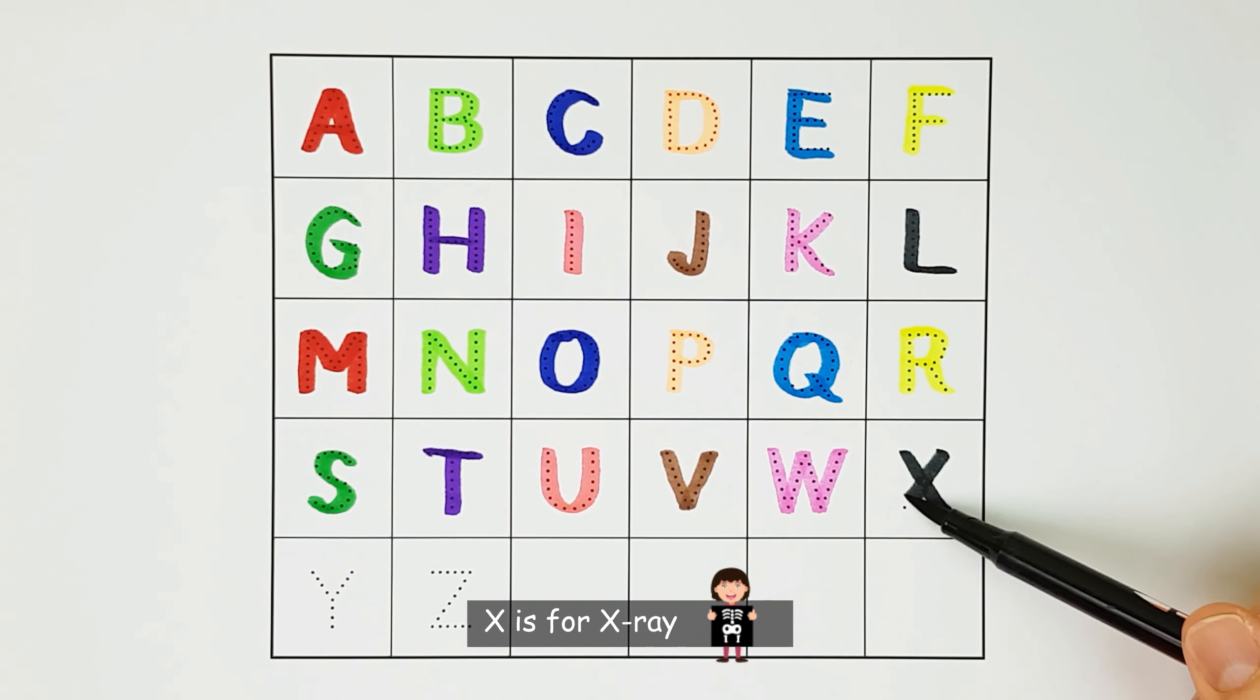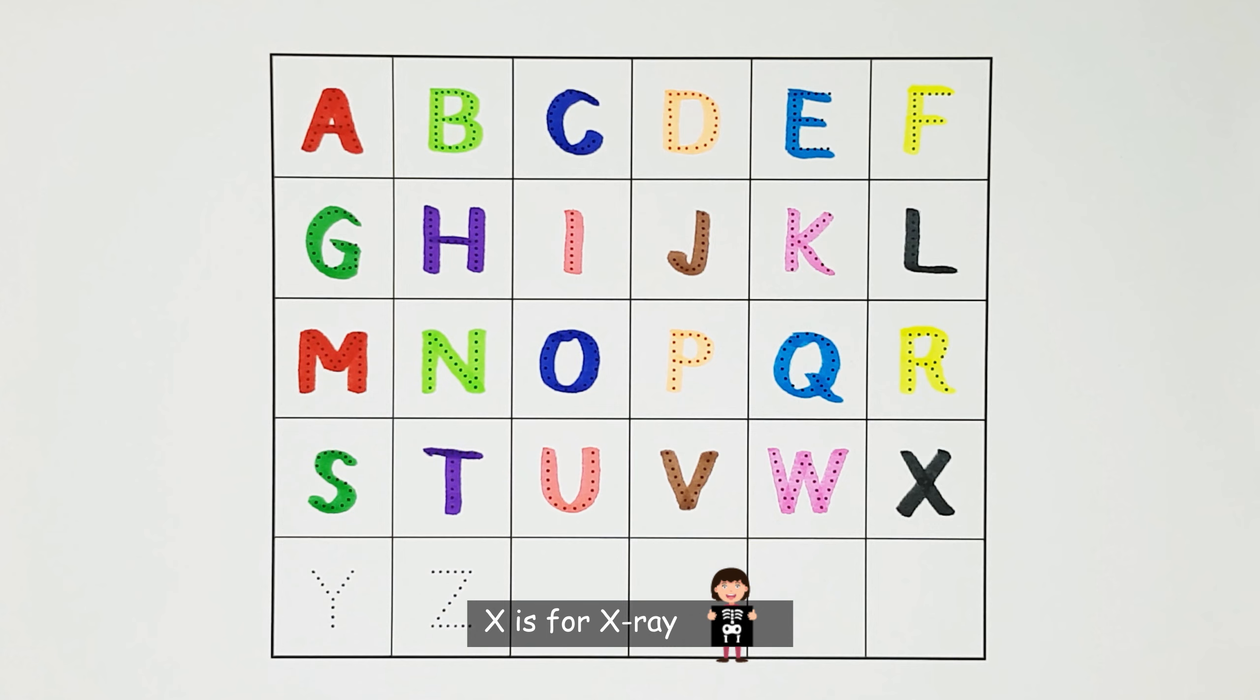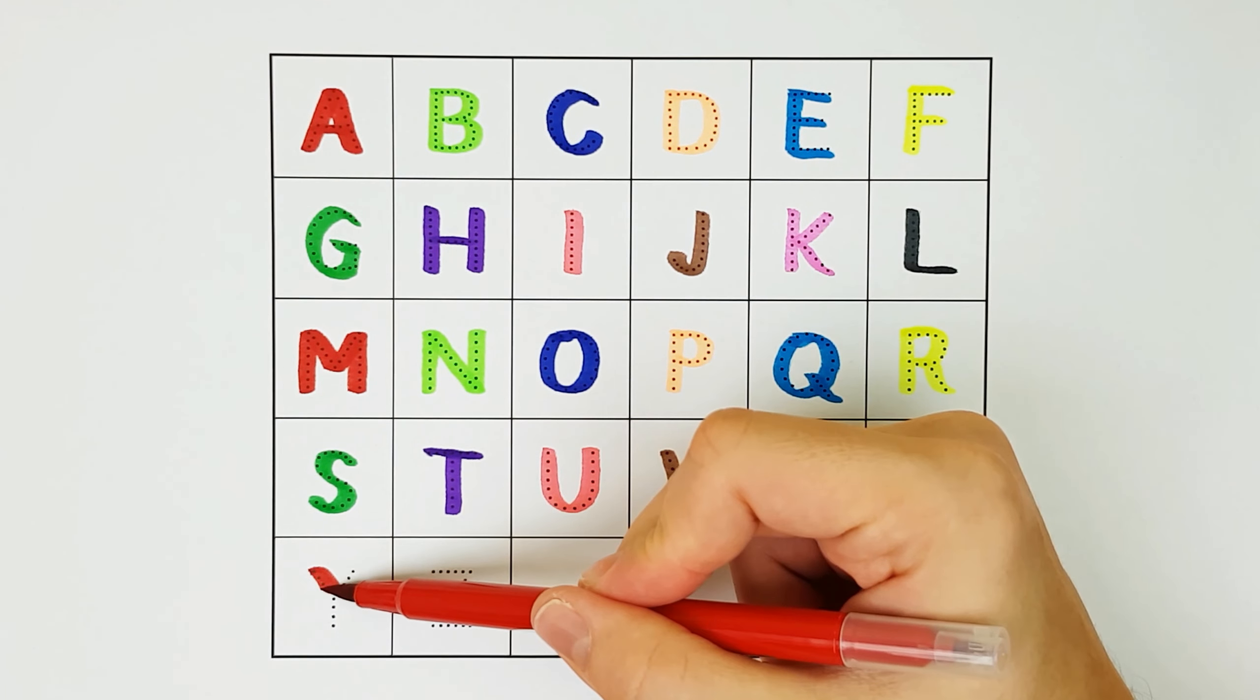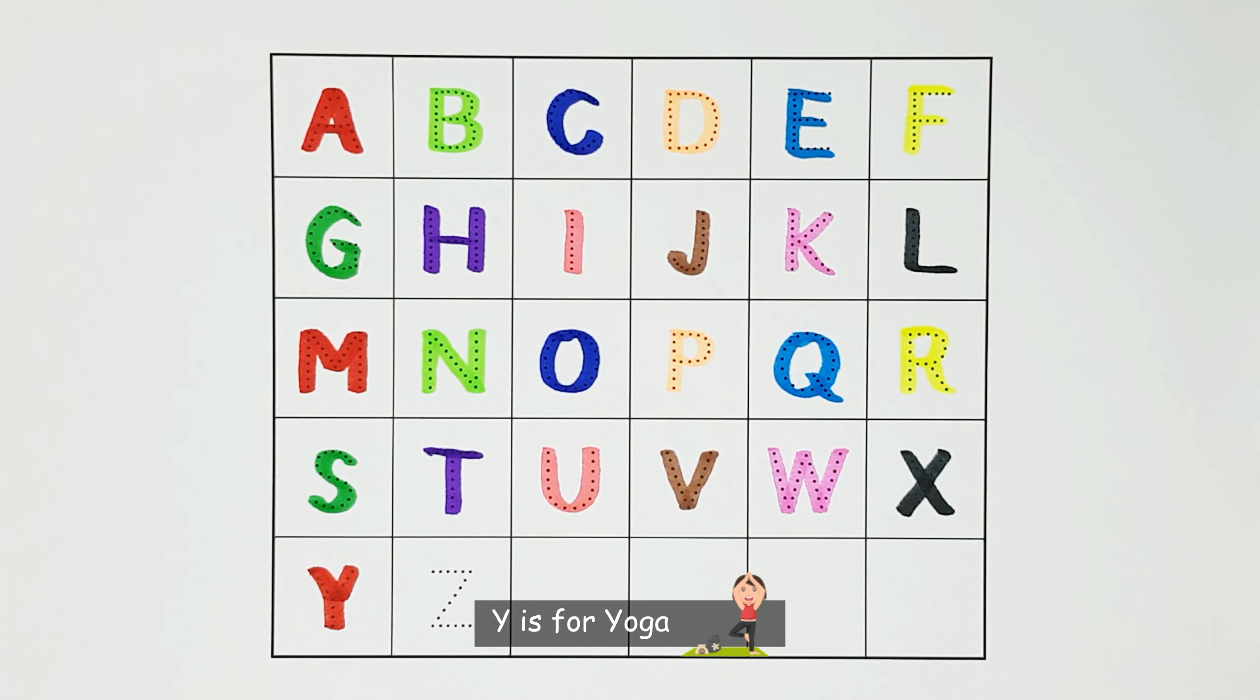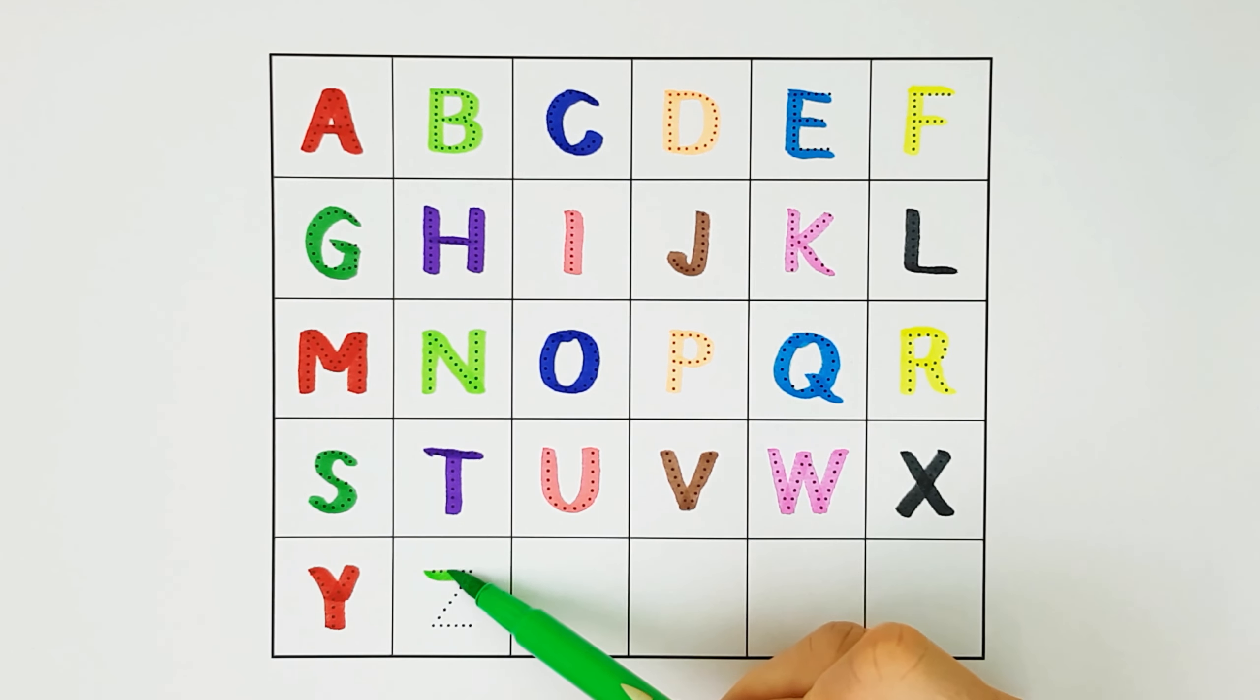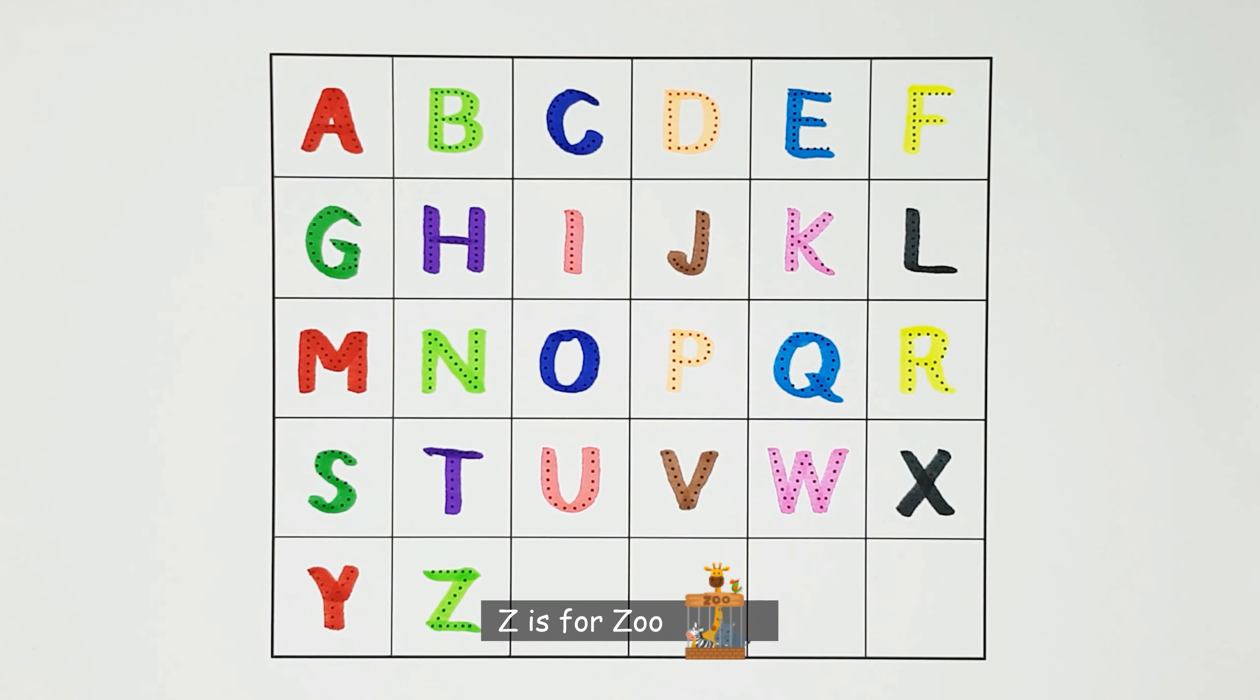X. X is for X-ray. X. Y. Y is for yoga. Y. Z. Z is for zoo. Z.